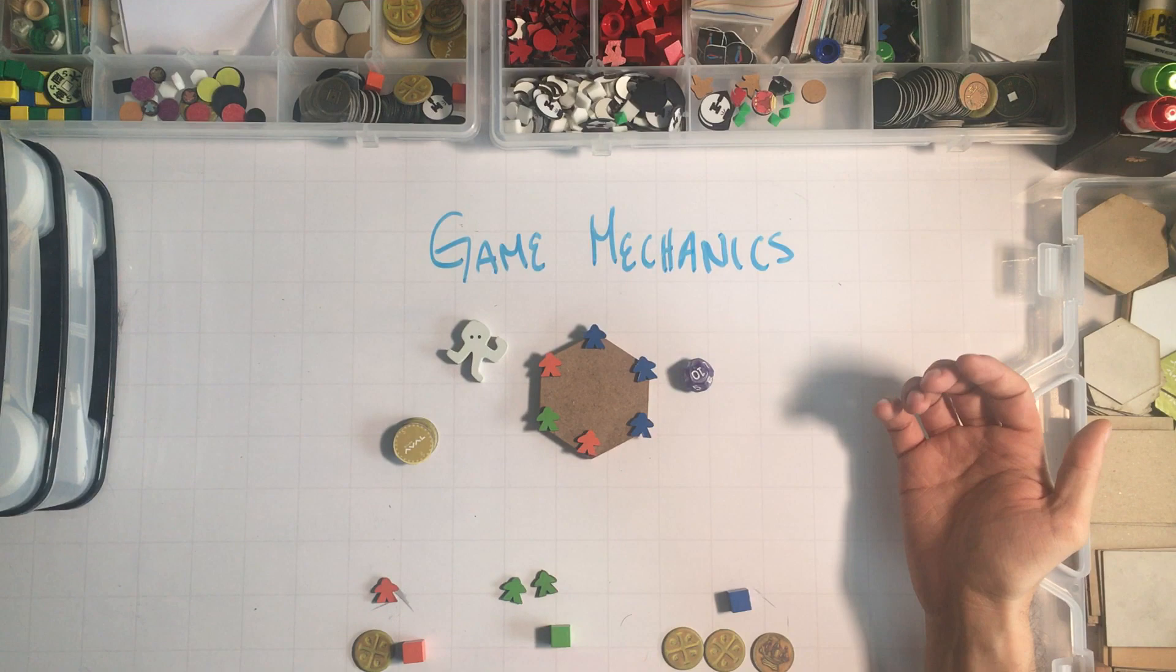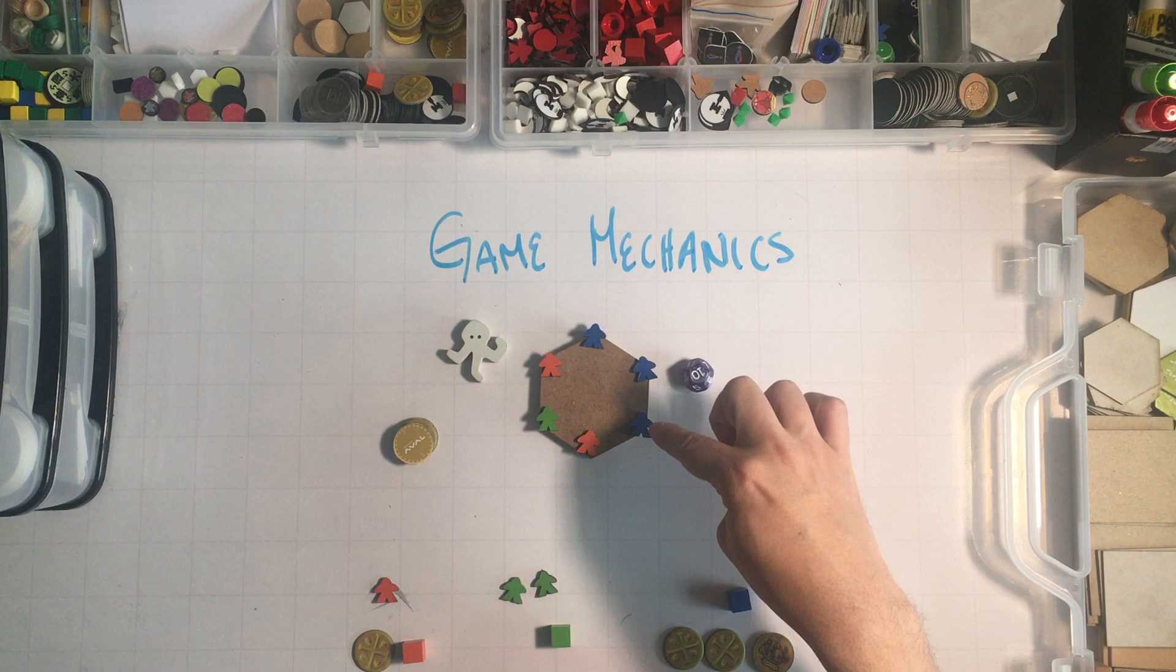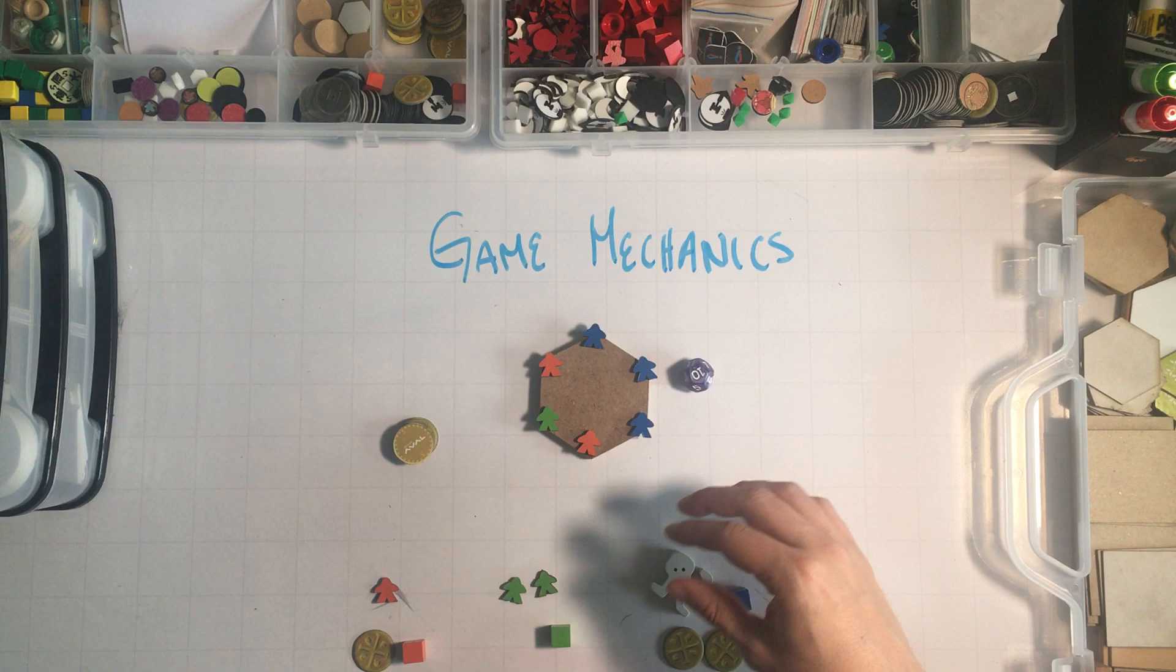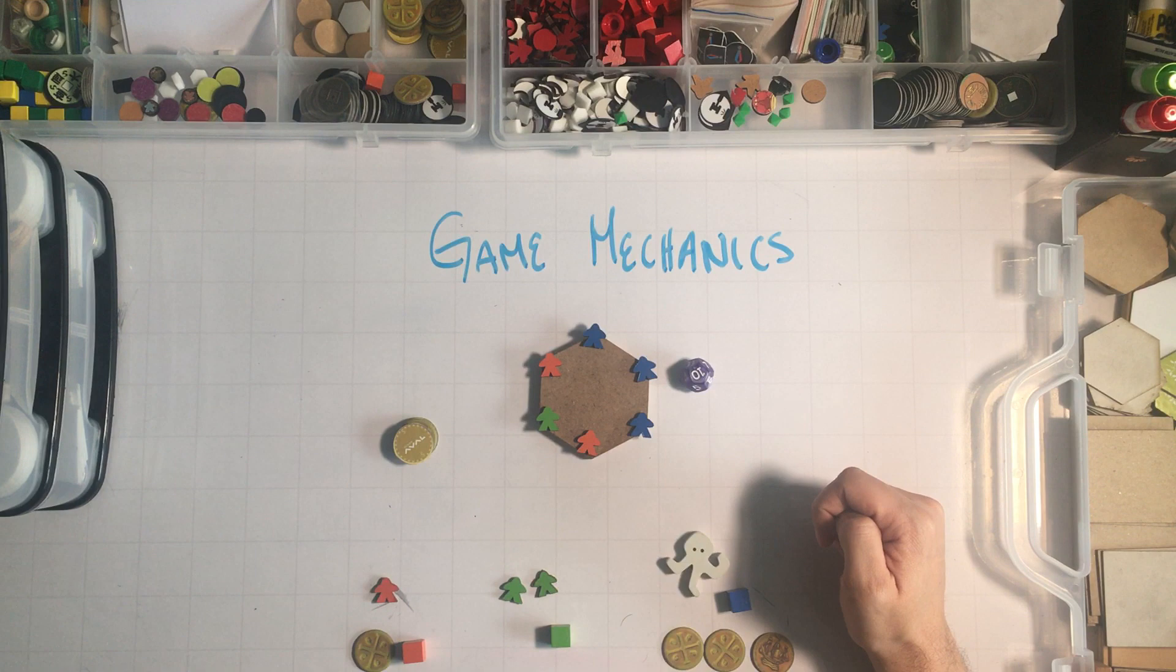In this case, if you make a line of three meeples, you get the octopus. And this octopus doesn't have anything to do with the game. It doesn't have a mechanic. It's just an acknowledgement that you were the first player to manage to achieve this in the game.